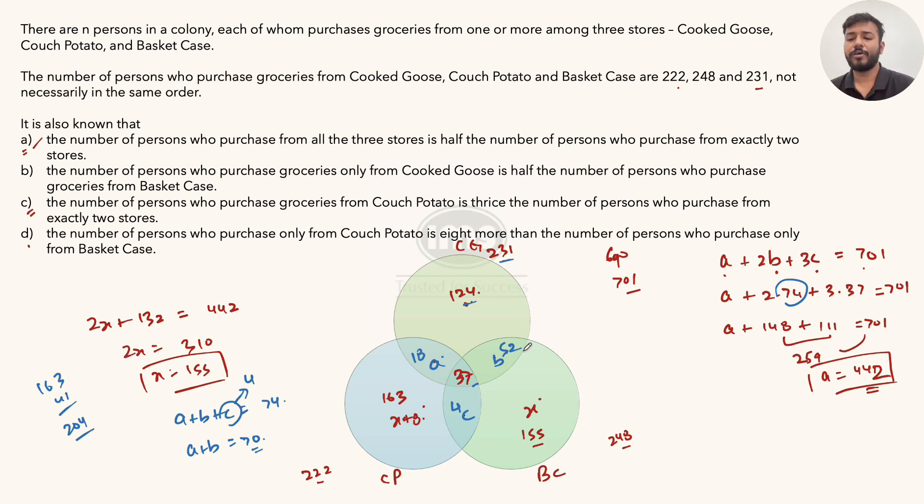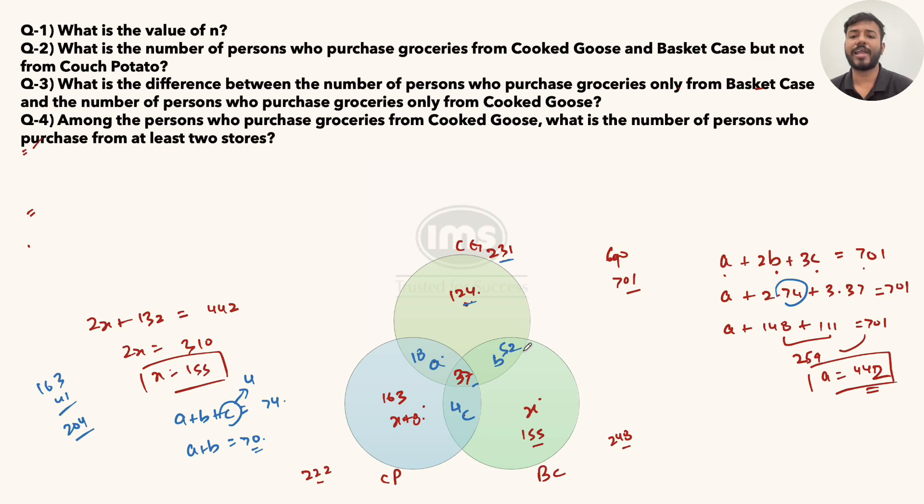And using all this information, we can solve all the problems. Now let's start solving. First question: What is the value of N? N is the total number. Simply add 231 plus 155 plus 52. That's 159, or finally 163. Let's add: this becomes 540 plus 13, that is 553. This is the answer to the first problem: 553.